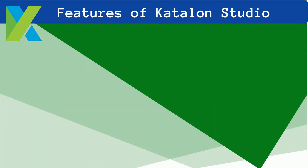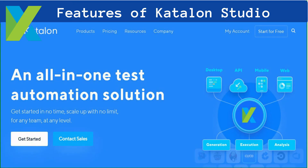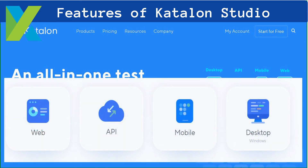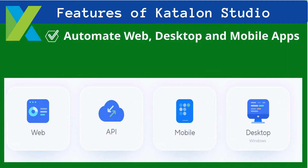We will now discuss the important features of Katalon Studio as a test automation tool. First, automate web, desktop, and mobile apps. This is the most important feature of Katalon Studio as it supports a wide range of applications for end-to-end testing, including desktop, web, and mobile applications.